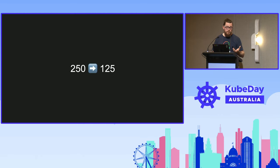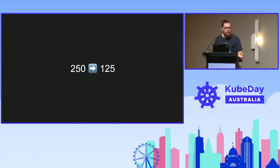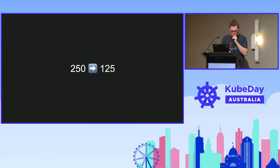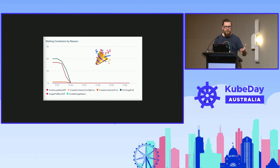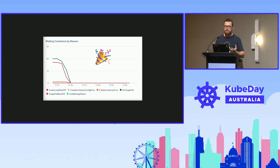We also ship an infrastructure change to drop the maximum number of pods per node from 250 to 125. We also ship a change on the test runner to increase the timeout before it waits to retry, just in case that's contributing to the issue. Some hours go by while these changes roll out, and thankfully we see the number of waiting pods come down. Things come back to a normal situation. We call the incident done.